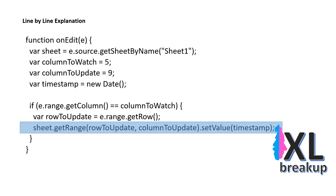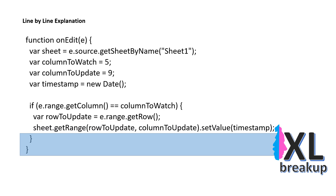This line gets the range in ColumnToUpdate and RowToUpdate and sets the value of the cell to the timestamp. This line closes the if statement and the function.